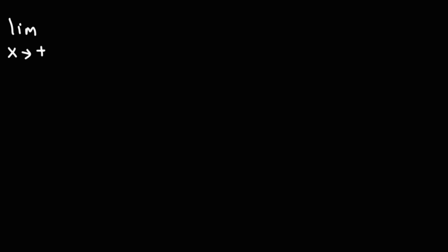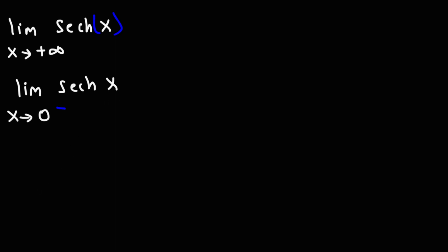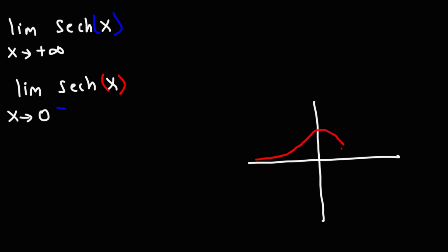Now let's try some more examples. Find the limit as x approaches positive infinity of hyperbolic secant, and the limit as x approaches 0 from the left of hyperbolic secant as well. So let's begin by drawing a graph of hyperbolic secant. The graph looks something like this, and this point has a y-value of 1.